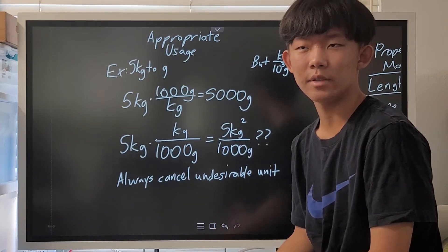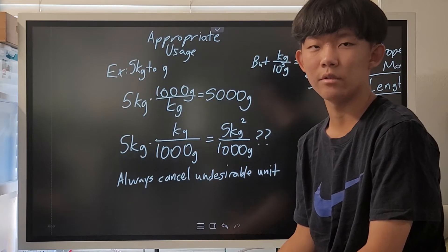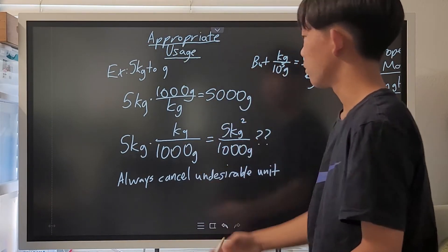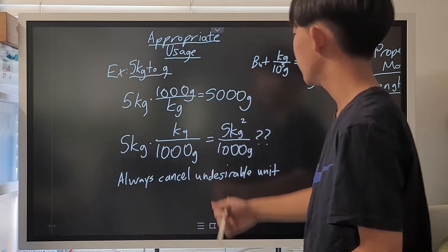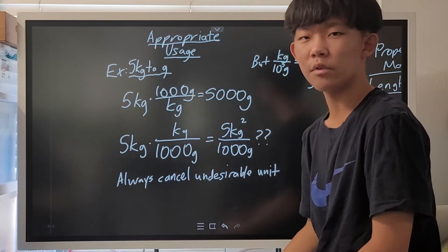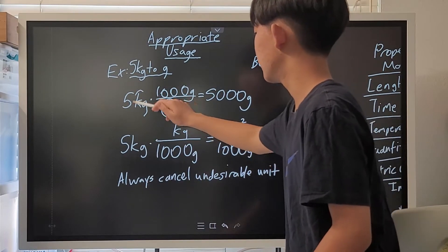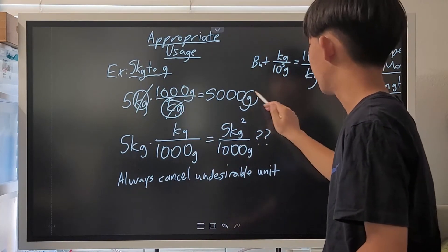However, just like almost anything in the world, conversion factors have a user's manual. We need to use conversion factors appropriately for it to succeed. For example, if I want to convert 5 kilograms to grams, the appropriate way to use it is to put kilograms in the denominator since this is a kilogram in the numerator, so that kilograms can cancel and we just get grams.